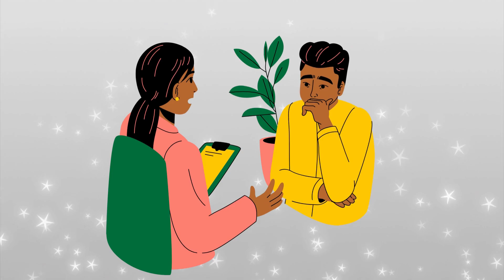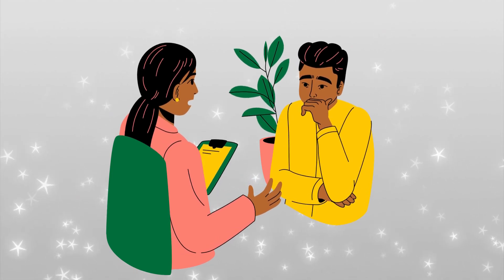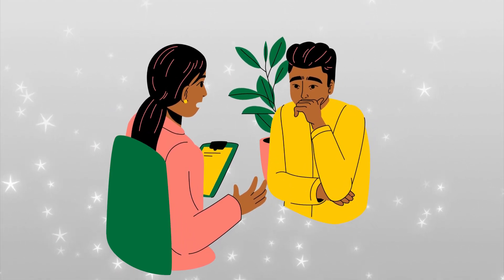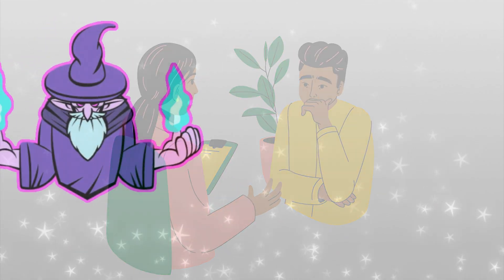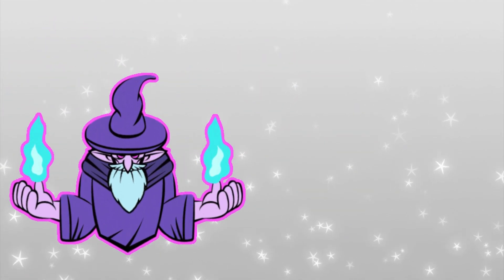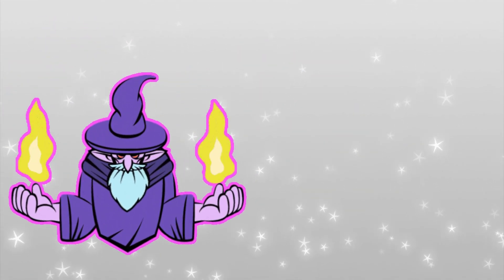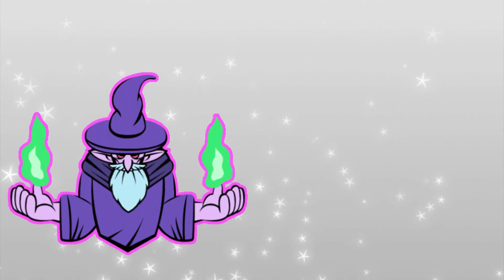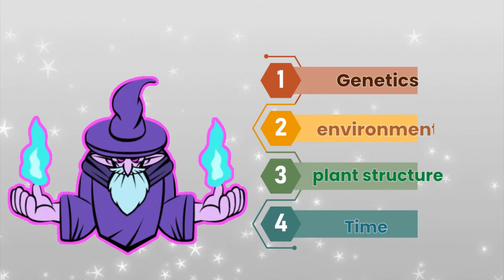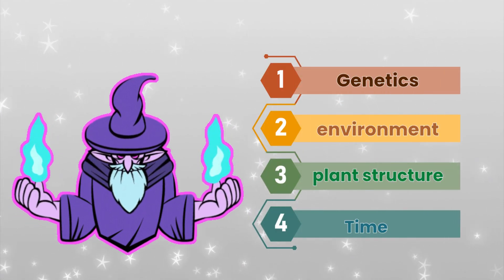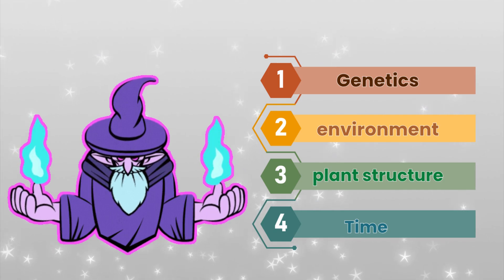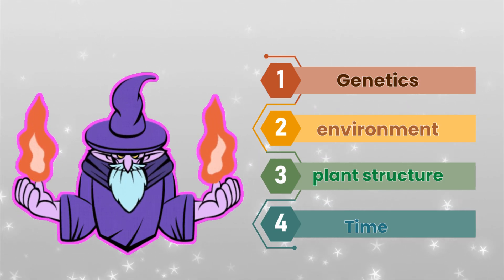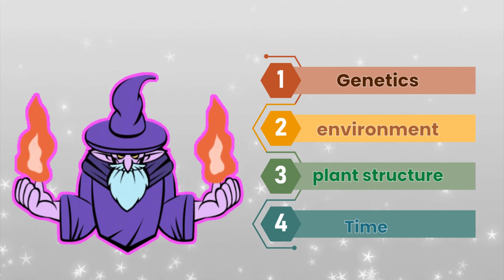When people talk about yield, they often look for tricks, shortcuts or magic formulas. But yield isn't magic. Yield is the result of interaction — between genetics, environment, plant structure and time. If you understand how the plant behaves, you understand where yield comes from.